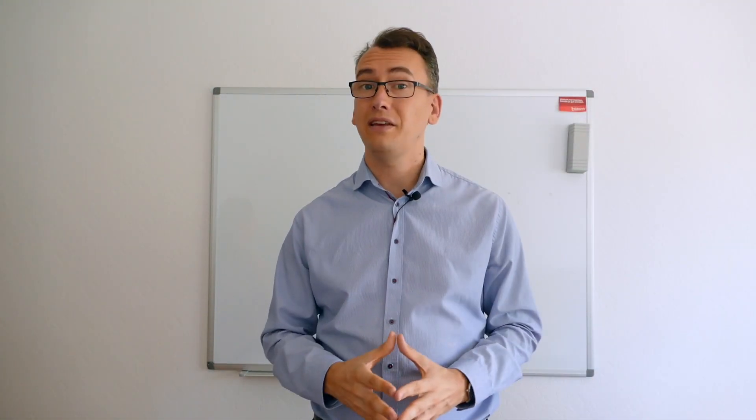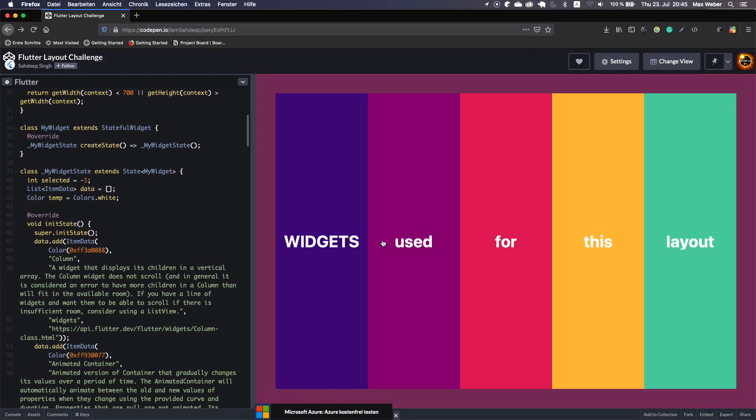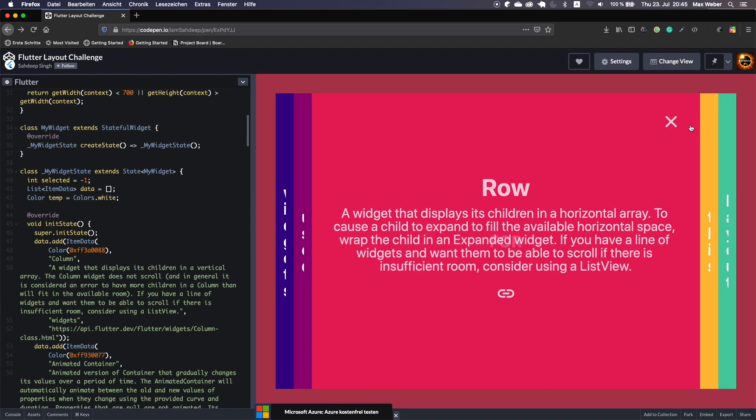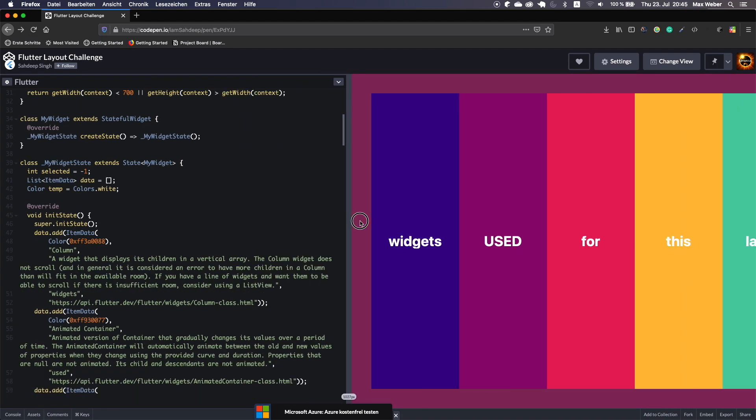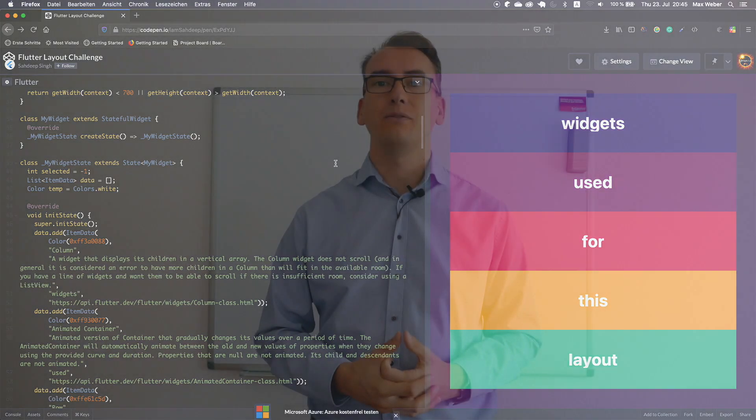Our Flutter pen of the week is from Sandeep Singh. He created a fantastic UI to develop a description for different Flutter layouts. We loved most the usage of implicit animation with animated container and animated opacity. Additionally, he created a responsive layout that made his row into a column, making it possible to have it on smaller screen sizes.